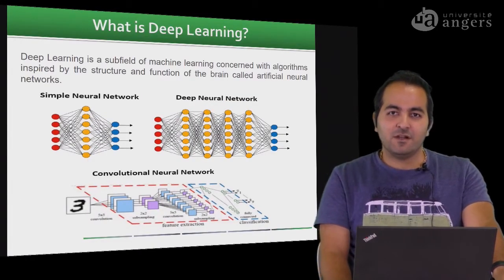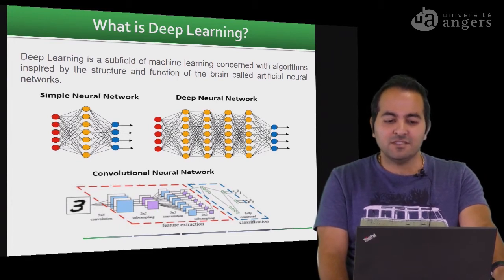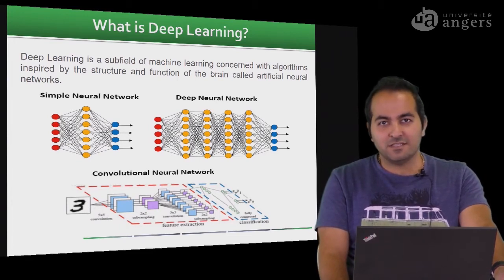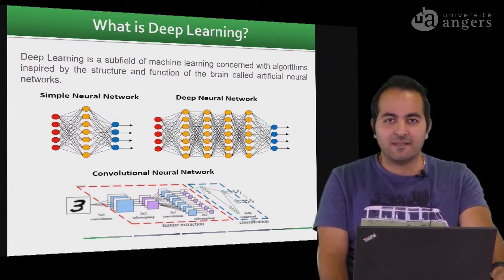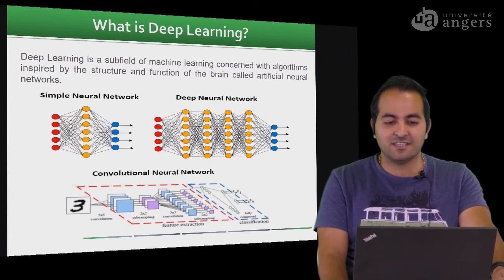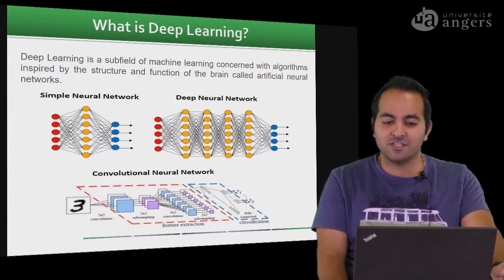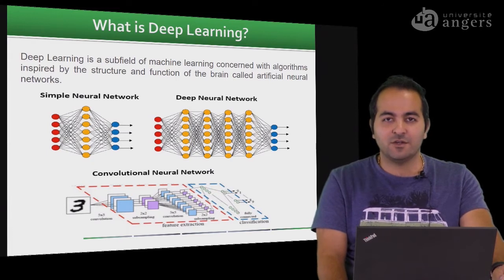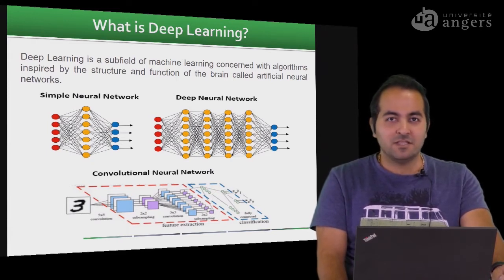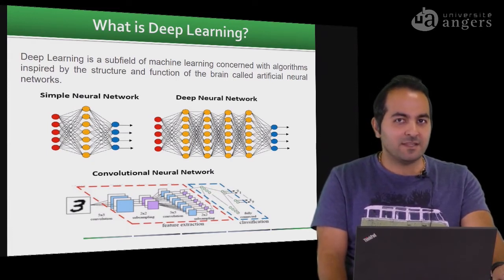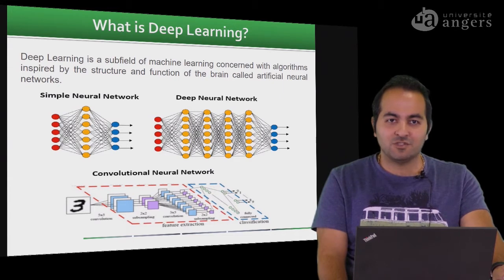First of all, we should know what is deep learning. As a Wikipedia description of deep learning, we can say deep learning is a subfield of machine learning concerned with algorithms inspired by the structure and function of the brain, called artificial neural networks. So it's inspired from the brain, so it should work like a brain.